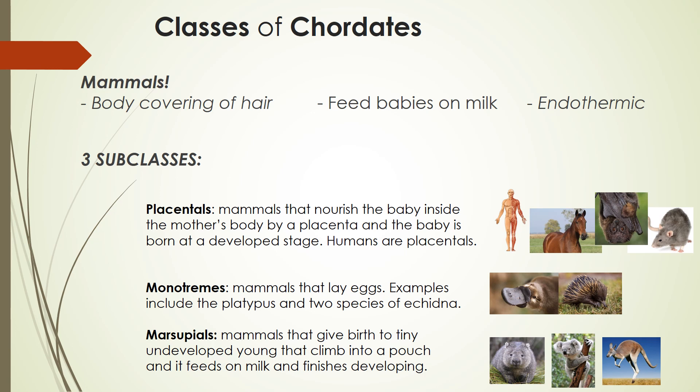There are three subclasses of mammals. Placentals are mammals where the baby finishes developing inside the mother, and then is born at a fairly developed stage. Examples include seals, dingoes, horses, humans, humpback whales, and flying foxes. Monotremes are mammals that lay eggs — examples include the platypus and two species of echidna. Marsupials are mammals that give birth to tiny, undeveloped young that climb into a pouch, where they feed on milk and finish developing. Examples include wombats, koalas, and kangaroos. In fact, most of the world's marsupials live in Australia.